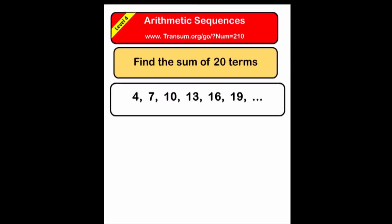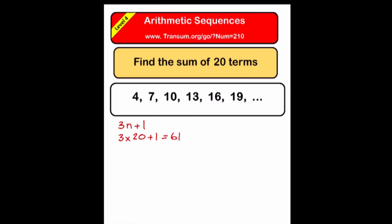Let's use that formula to find the sum of 20 terms of this sequence. First, find the formula for the nth term — it's 3n plus 1. The 20th term is 3 times 20 plus 1, which is 61. Now apply the Gauss formula: 20 over 2, lots of the first term plus the last term — that's 4 plus 61 equals 65, and 10 times 65 is 650. So the sum of the first 20 terms of that sequence is 650.